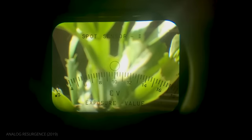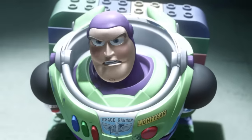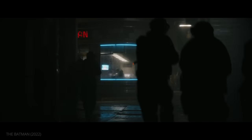You should face the subject from the same direction as your camera. Finally, press the button on the side of the meter. The tool will then indicate the f-stop for normal exposure. From here, you can decide to over or underexpose.